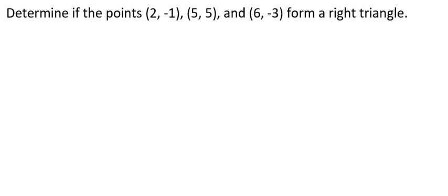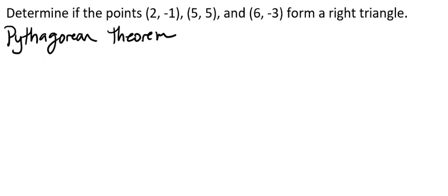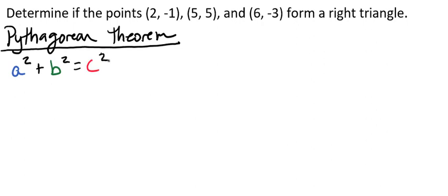In this video, we will be learning how to determine if three points on a plane form a right triangle. We're going to do that using an example. We're going to determine if the points (2, -1), (5, 5), and (6, -3) form a right triangle. To help us do that, we're going to use the Pythagorean theorem, which is a² + b² = c², where a and b are our legs and c is our hypotenuse.